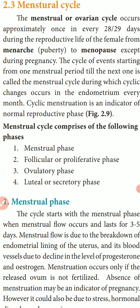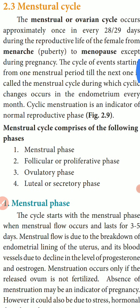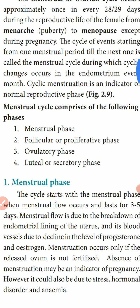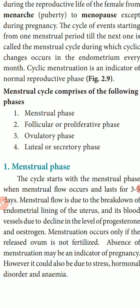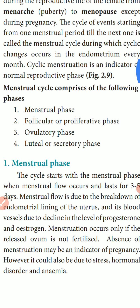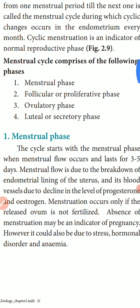The menstrual cycle comprises the following four phases across 28 or 29 days: first, the menstrual phase; second, the follicular or proliferative phase; third, the ovulatory phase; and fourth, the luteal or secretory phase.